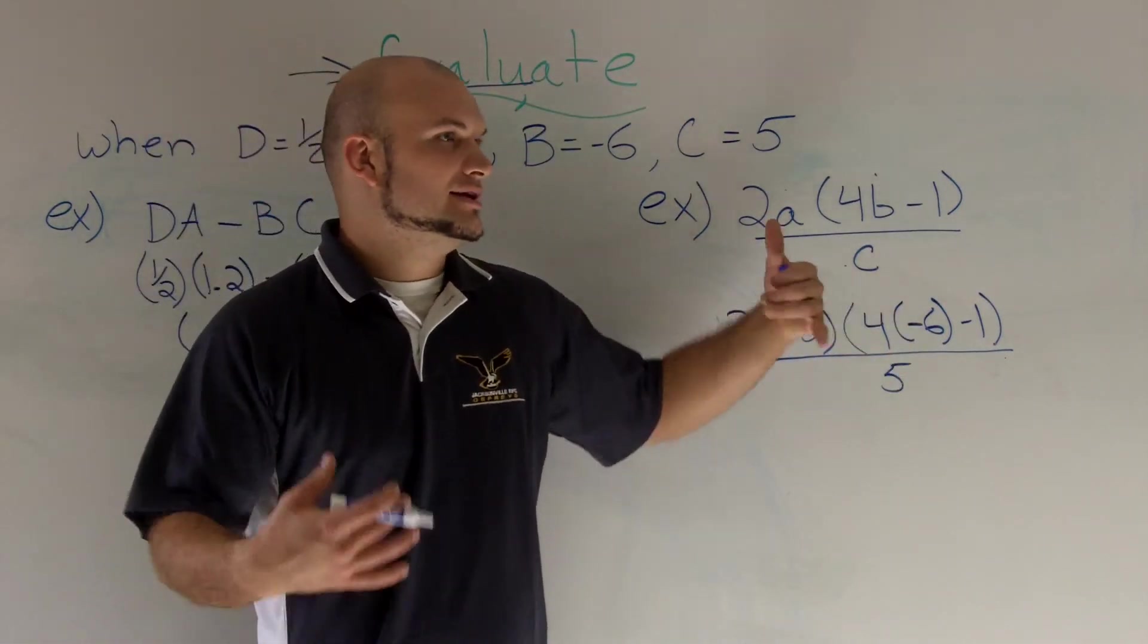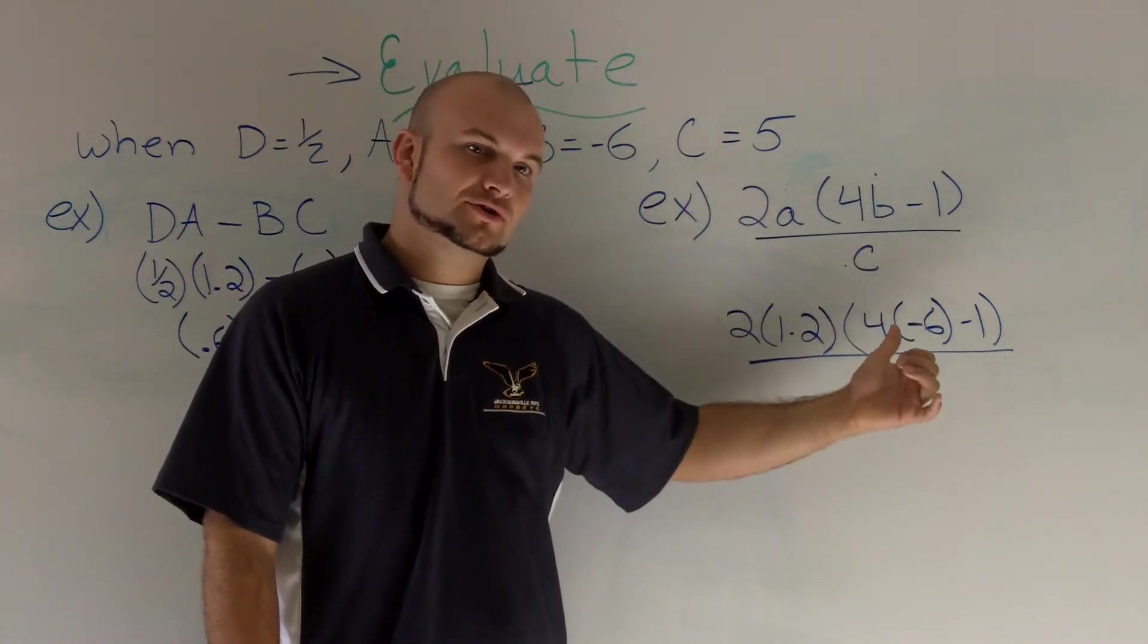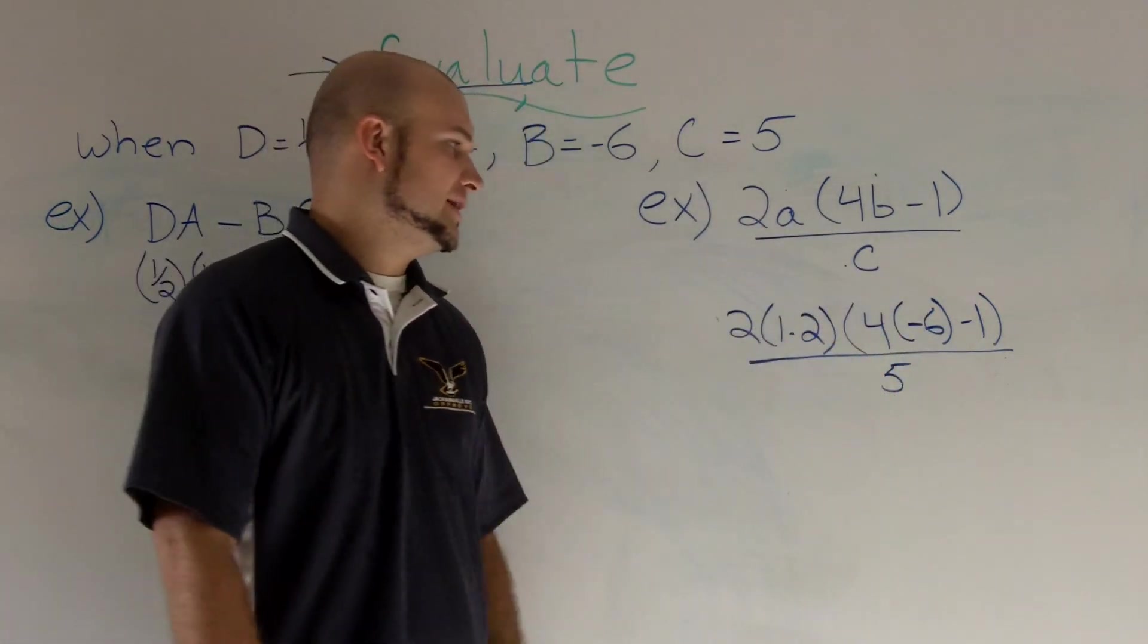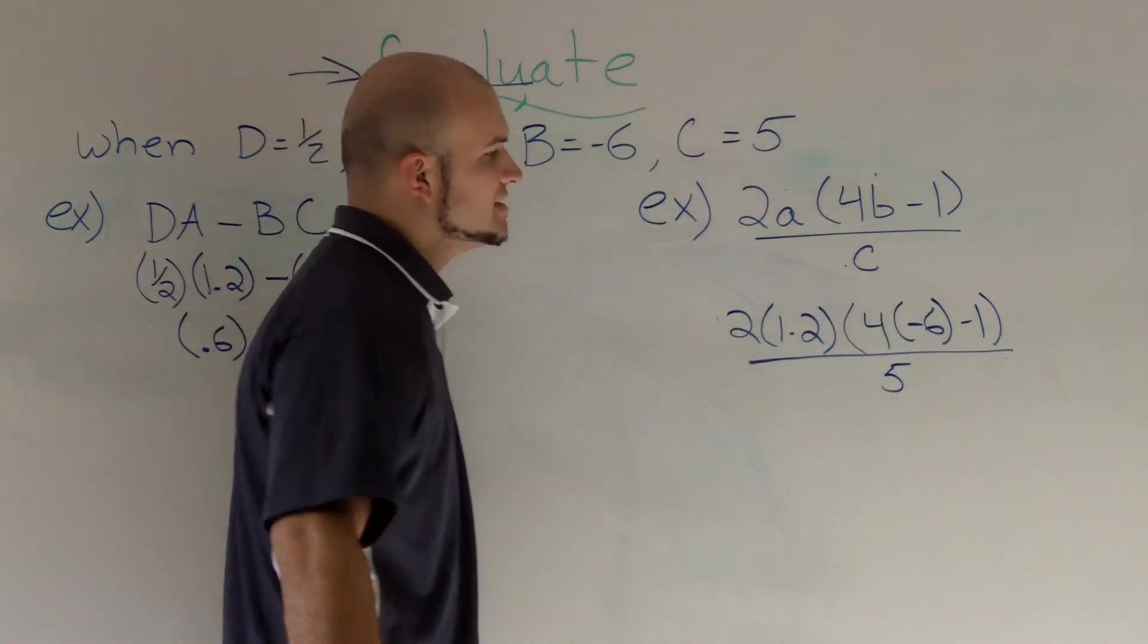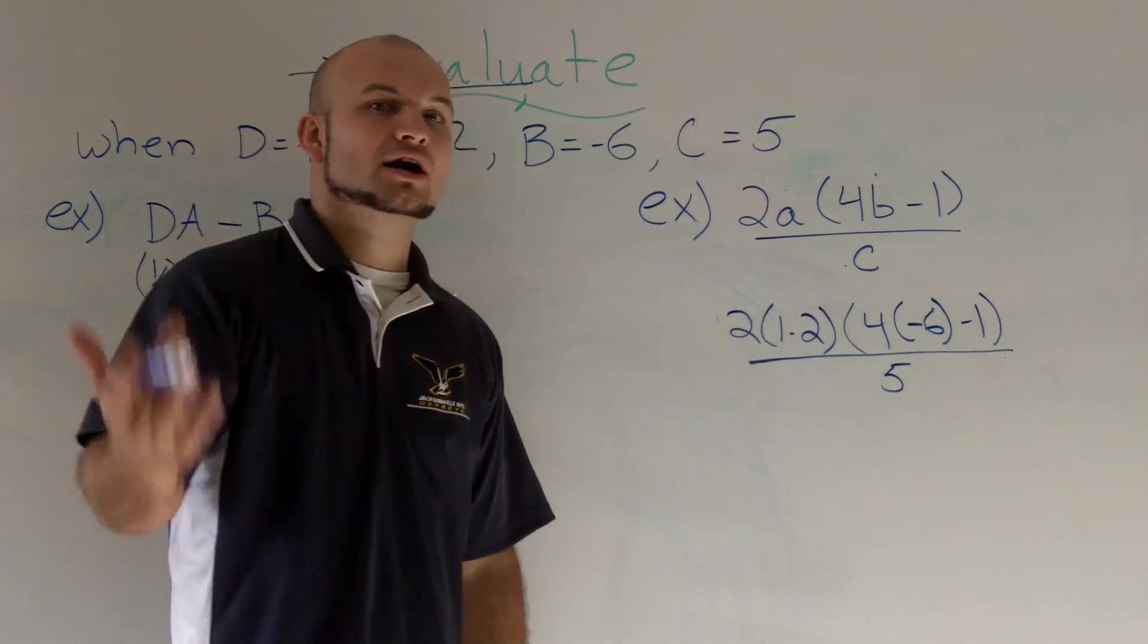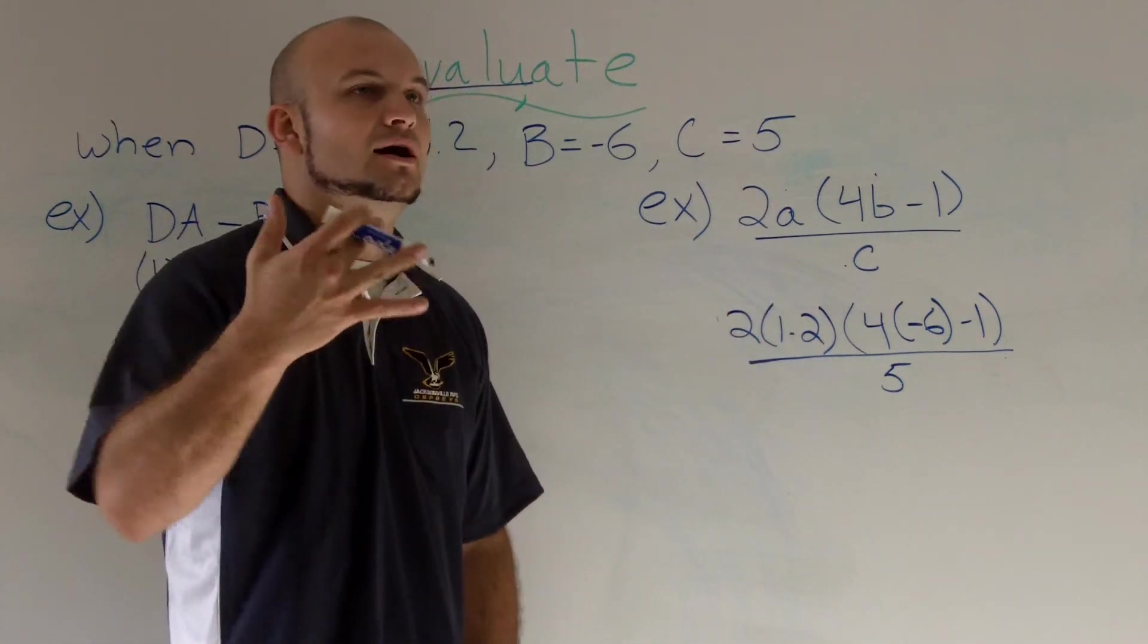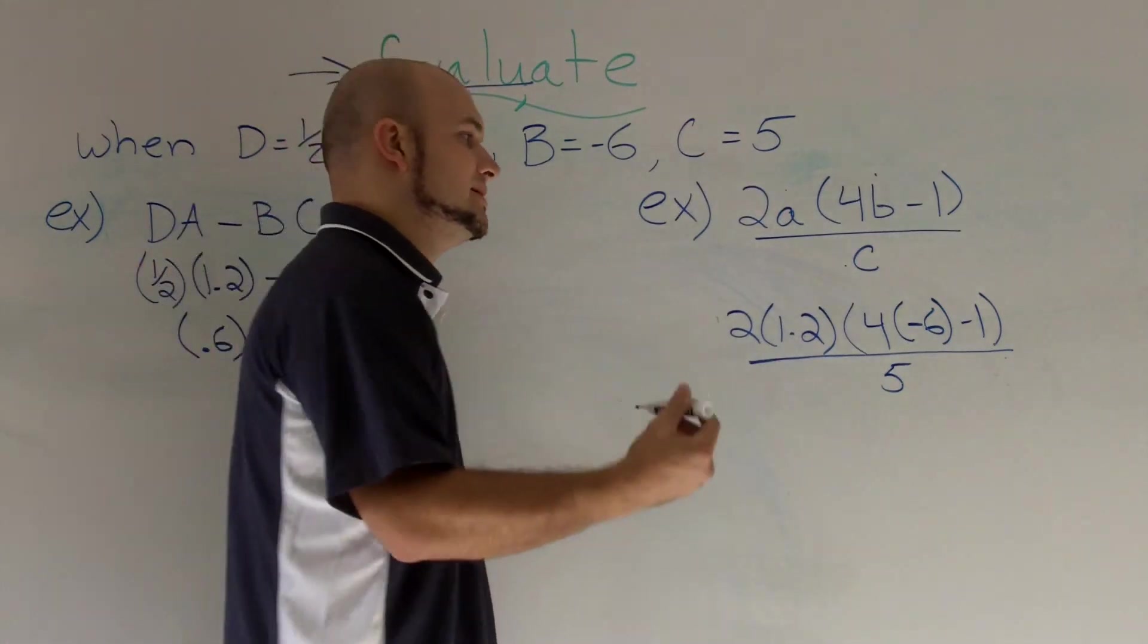I notice that inside the parenthesis I have multiplication. And according to my order of operations I do multiplication first. And then I can go ahead and subtract the 1. So when I do a 4 times a negative 6 I get a negative 24. And when I have a negative minus another number, I'm going to add that negative. So a negative 24 minus another 1 is going to be a negative 25.